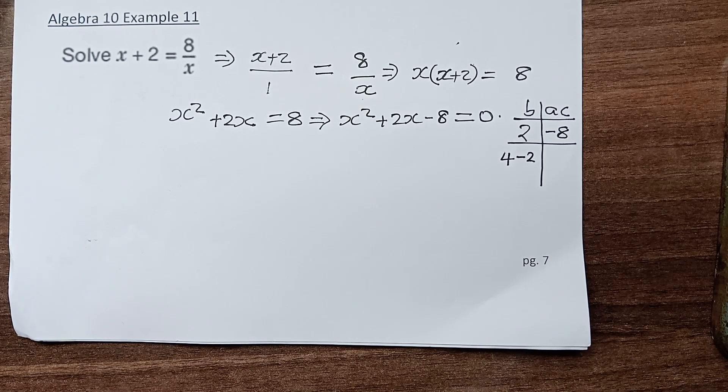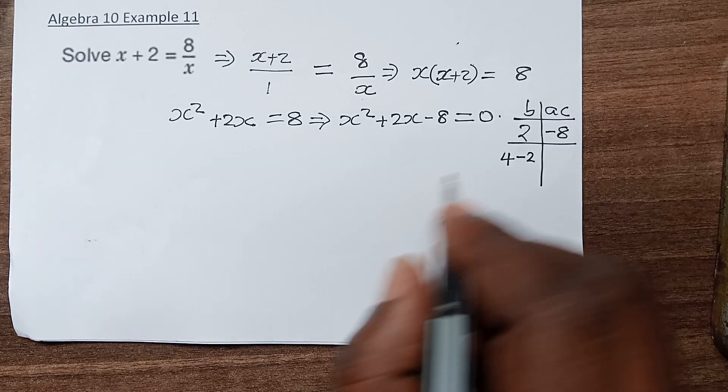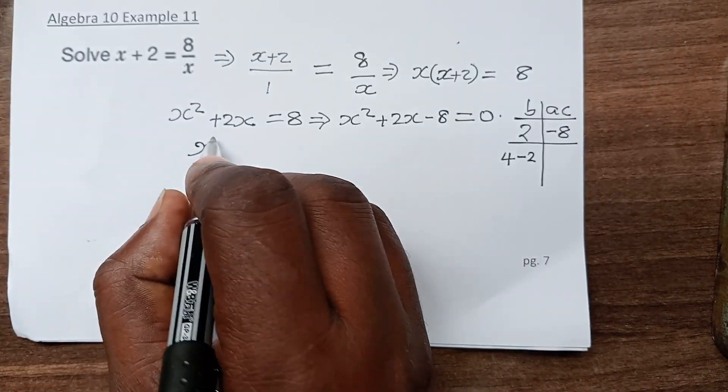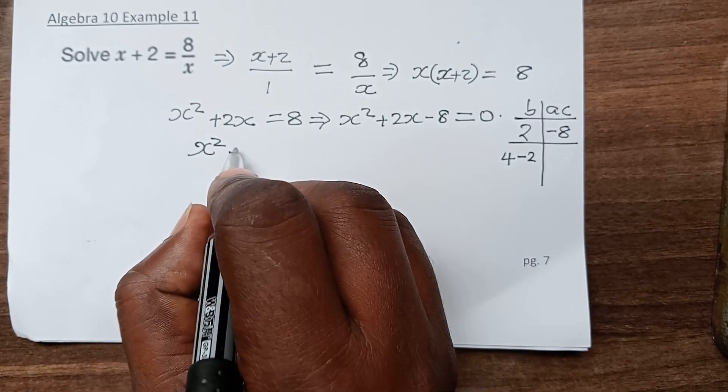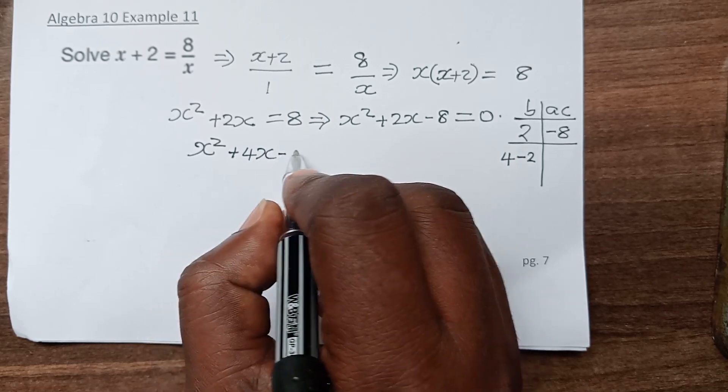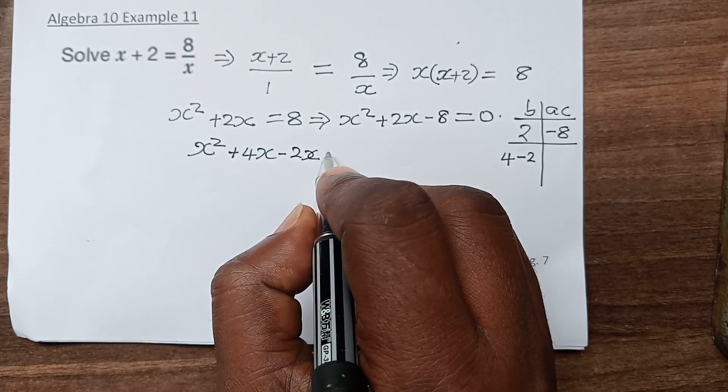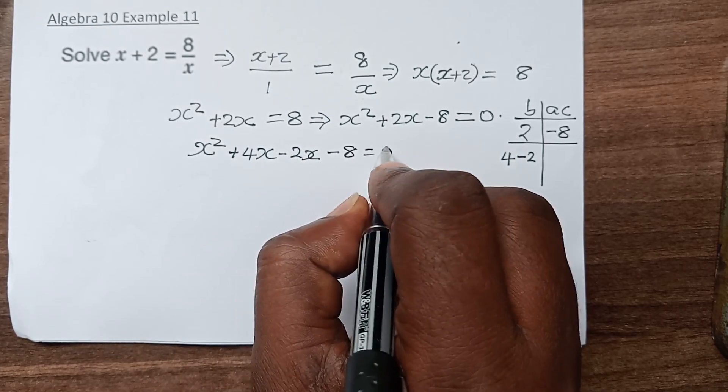Now, we substitute the middle term with these two factors: x squared plus 4x minus 2x minus 8 equals 0.